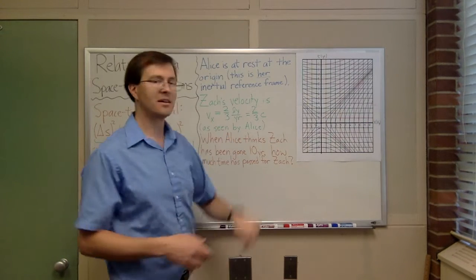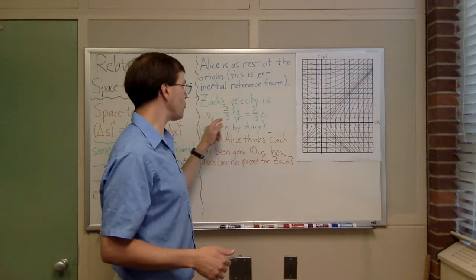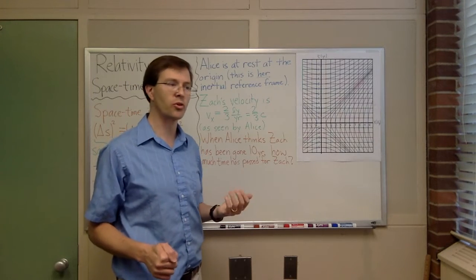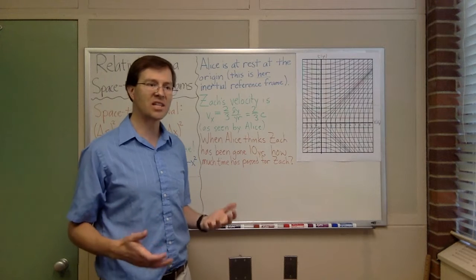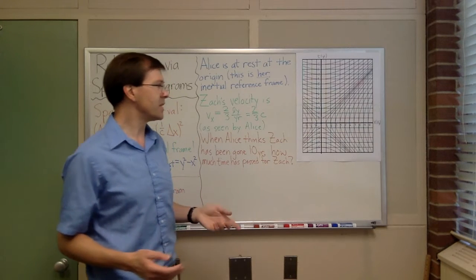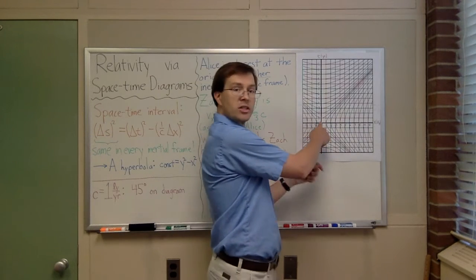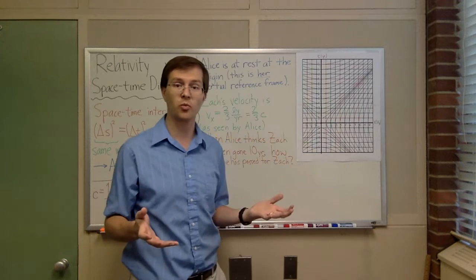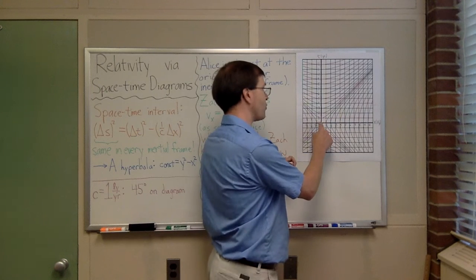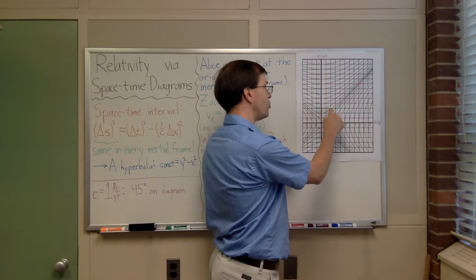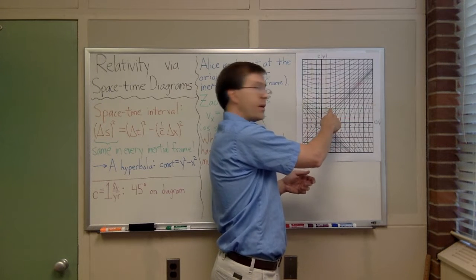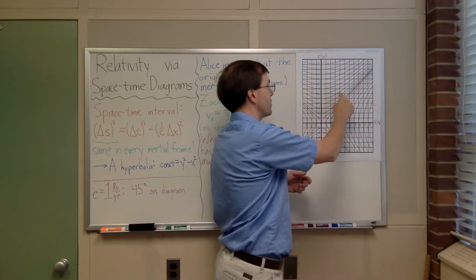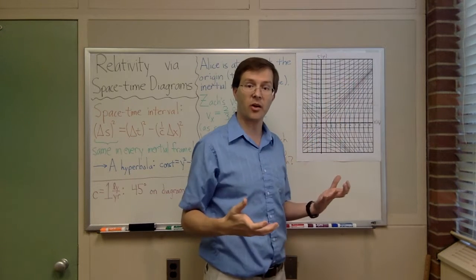On the other hand, Zach has a velocity of two-thirds light years per year, two-thirds times the speed of light, two-thirds c. If that's Zach's velocity, that means every time, if Zach starts at the origin, if Zach travels for three years, he will have moved two light years over. That's two-thirds light years per year, two light years every three years. Three more years, two more light years, three more years, two more light years. You get the idea of how that works.